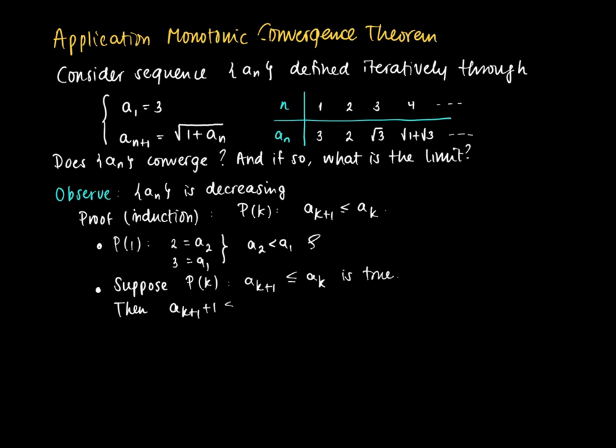Well, aₖ₊₁, if we add 1, it's still smaller or equal than aₖ plus 1. So here we immediately use the induction hypothesis. And then by taking the square root on both sides we see that the square root of aₖ₊₁ plus 1 is smaller or equal than the square root of aₖ plus 1.